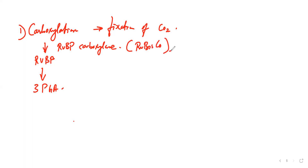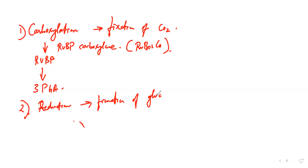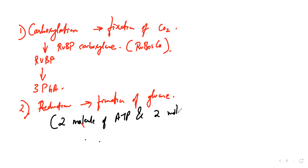In the second step, a reduction series takes place to produce glucose. This reaction leads to the formation of glucose. For this purpose, two molecules of ATP and two molecules of NADPH are used. If you want to reduce one molecule of CO2, you need two molecules of ATP and two molecules of NADPH.